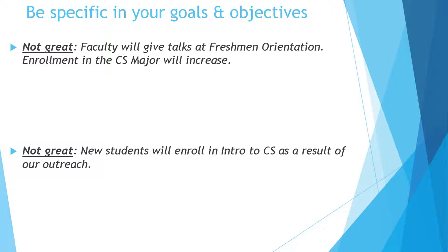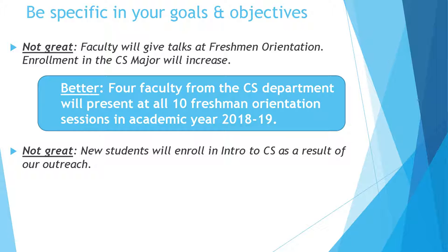It's important that you make the objectives of your intervention clear and specific. Here I'm giving some positive and negative examples to show you what I mean. One goal could be stated as: faculty will give talks at freshman orientation and enrollment in the CS major will increase. That does describe maybe what you expect to do and what you hope will happen. But here's a better, more specific version: four faculty from the CS department will present at all ten freshman orientation sessions in academic year 2018-19, and then you would go on to specify who and what the content would be.